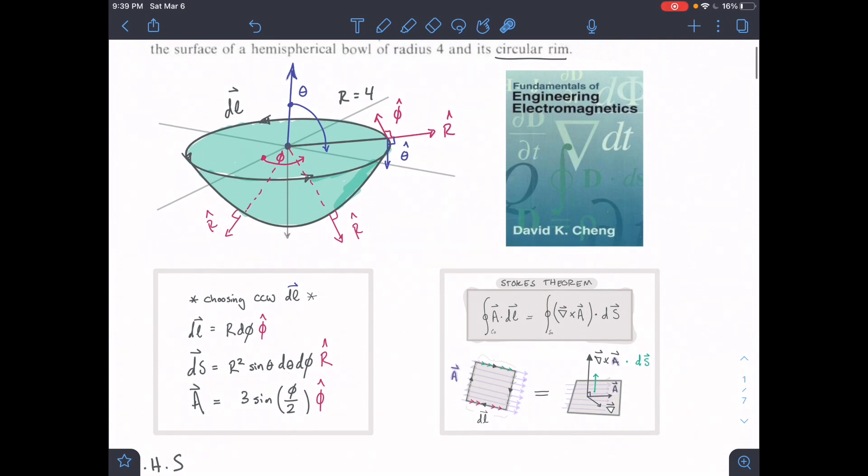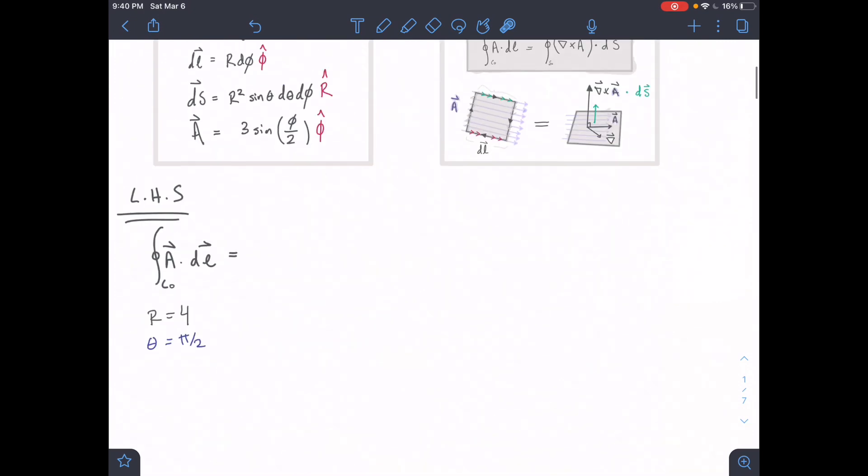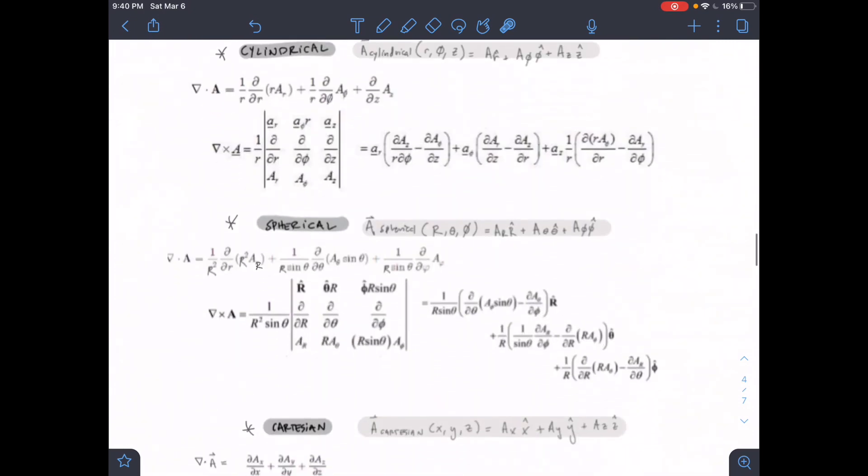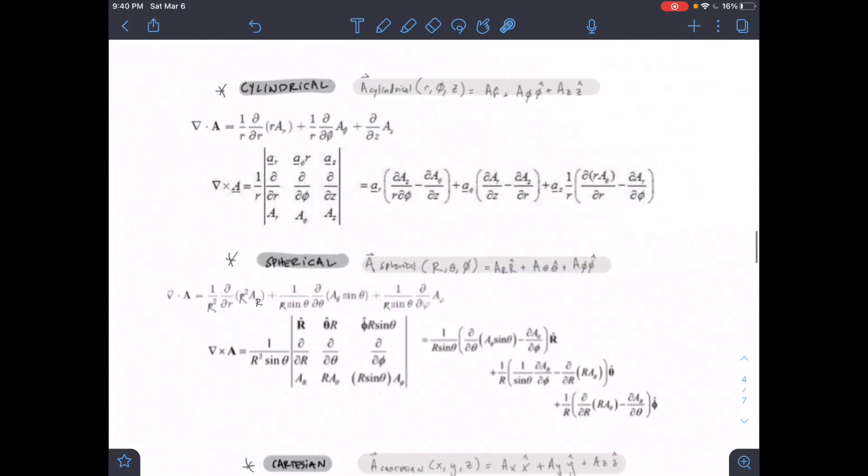For DS, for the setup for this exterior part of the sphere, we have this general DS for a sphere. This equation, when integrated, gives us the surface area of a sphere.